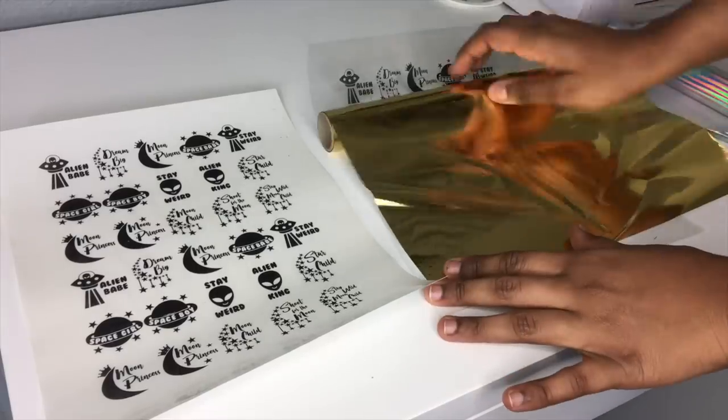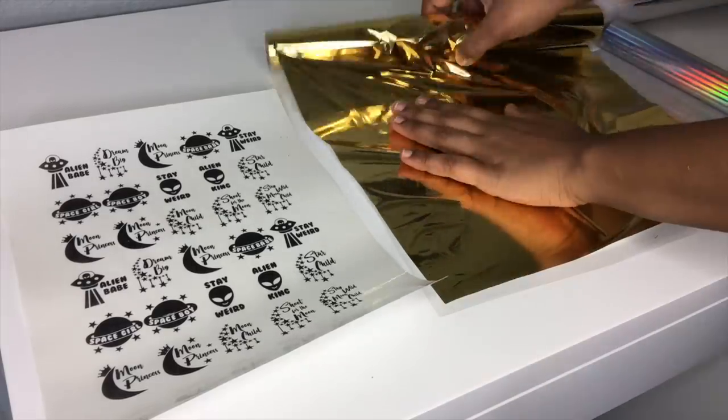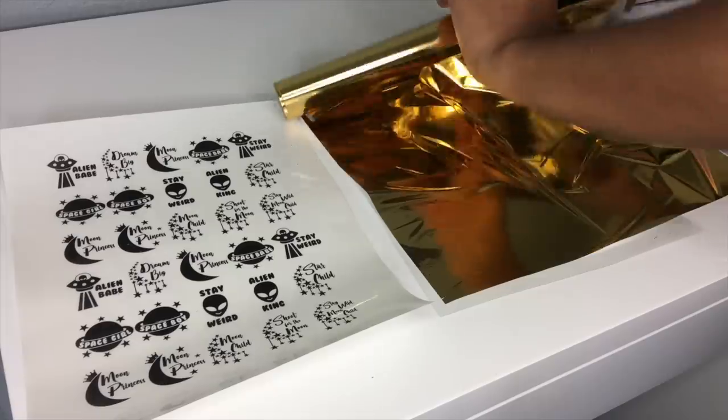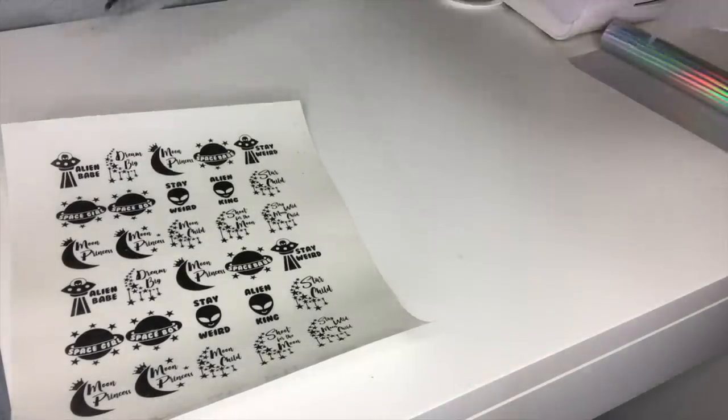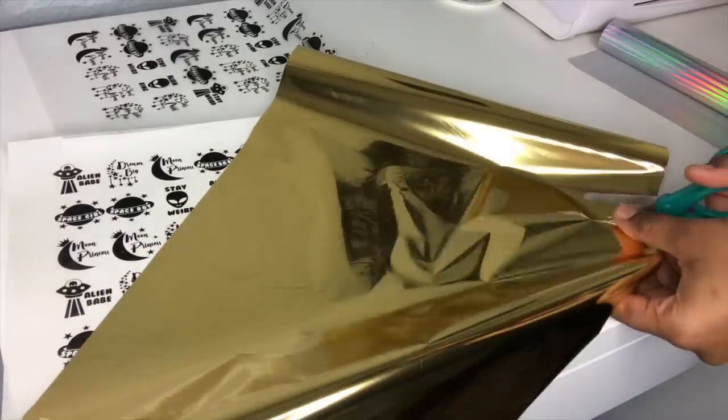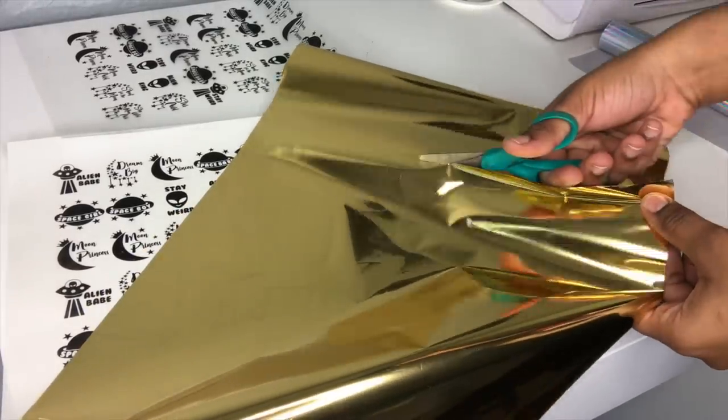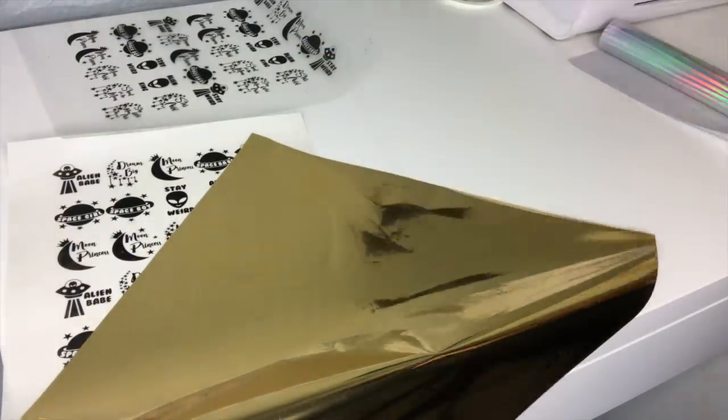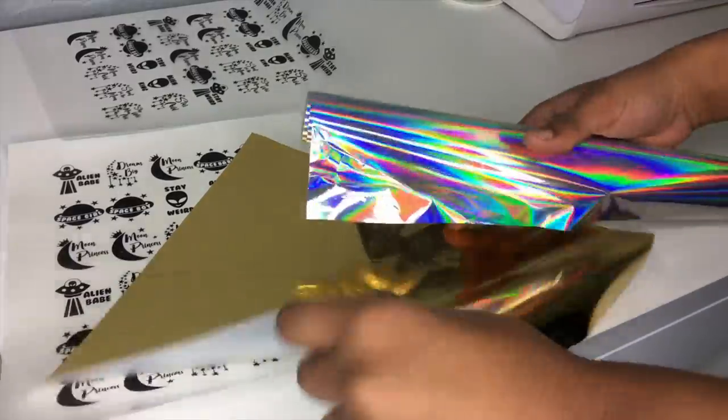Now that I have my designs printed on the sticker paper and the transparency film, I'm going to take my heat transfer foil and measure it to the papers. I'm going to cut it down in size so that when I use my pouch later on, it can fit into it perfectly and I don't have any issues.